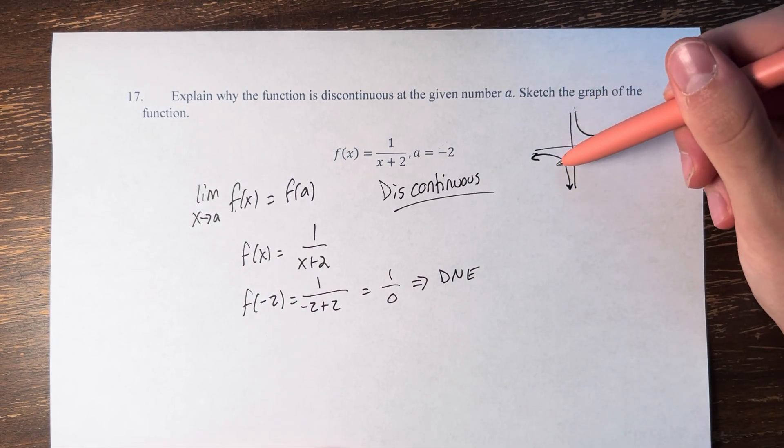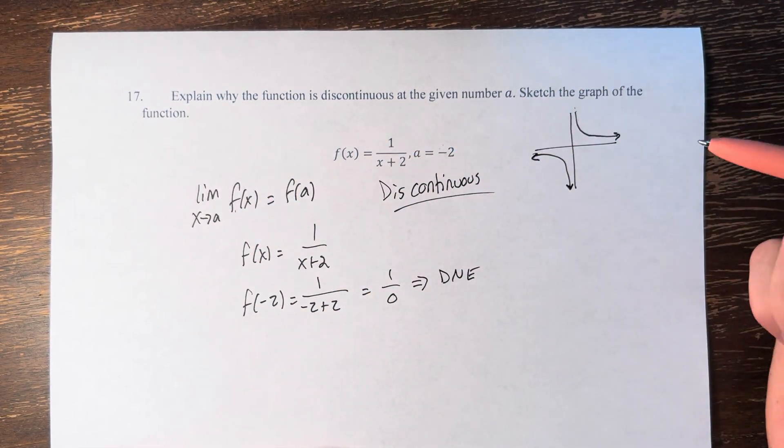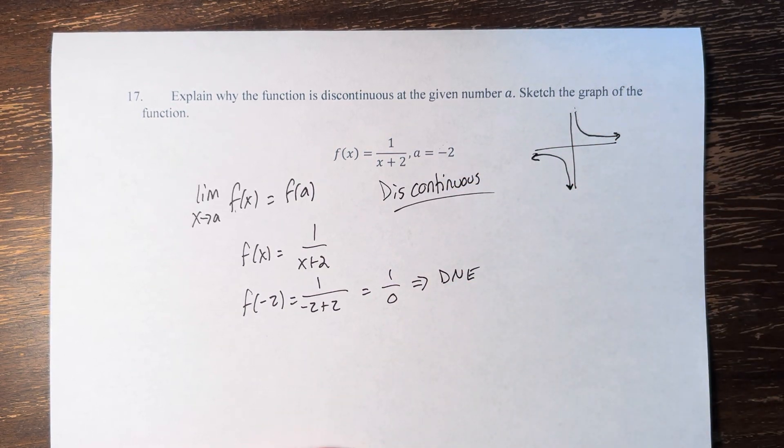We're going off to infinity and negative infinity as we get closer to 0, and to 0 as we get closer to negative infinity and infinity.